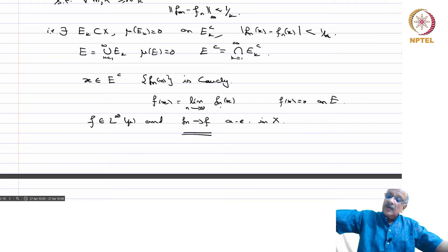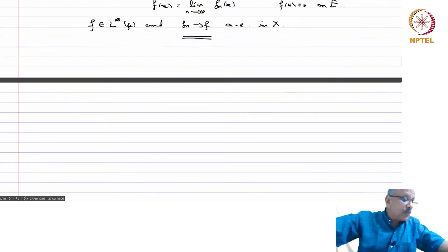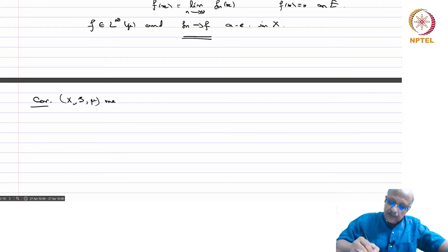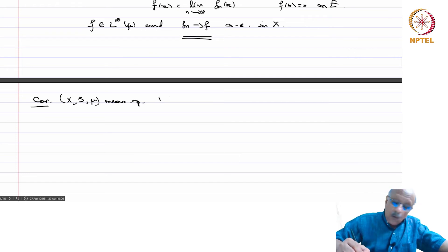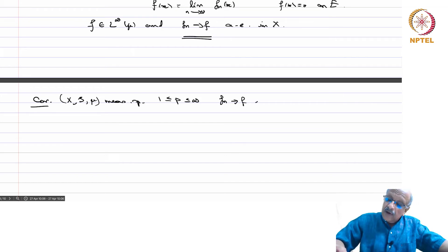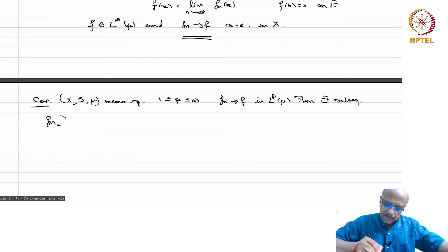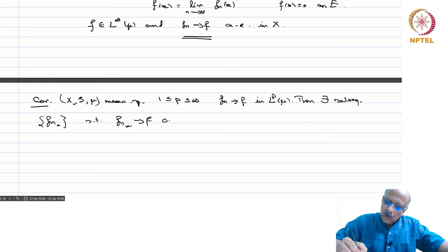That proves LP(mu) is a Banach space, completing the proof. Corollary: Let (X, S, mu) be a measure space with 1 ≤ p ≤ infinity. If f_n converges to f in LP(mu), then there exists a subsequence f_{n_k} such that f_{n_k} converges to f almost everywhere.